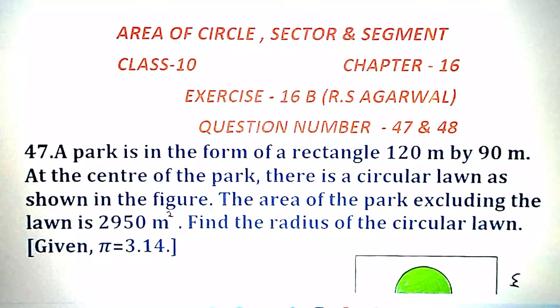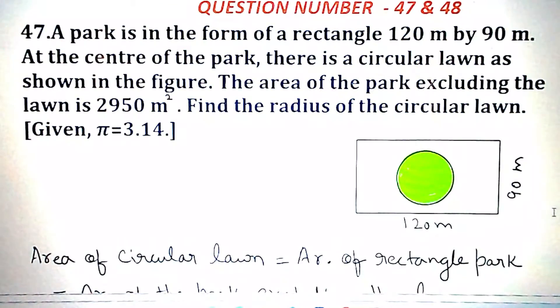Question number 47: A park is in the form of a rectangle 120 meter by 90 meter. At the center of the park, there is a circular lawn as shown in the figure. The area of the park excluding the lawn is 2950 meter square. Find the radius of the circular lawn.